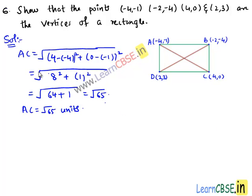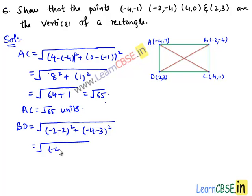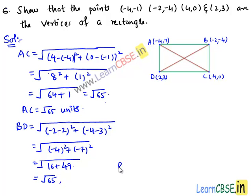Now let us find the length of the other diagonal BD. BD equals the square root of (x₂ - x₁)² which is (-2 - 2)² plus (y₂ - y₁)² that is (-4 - 3)², which equals the square root of (-4)² plus (-7)², equal to the square root of 16 plus 49, which is equal to √65. Hence we got the length BD as √65 units.